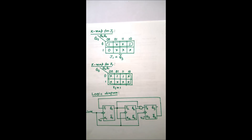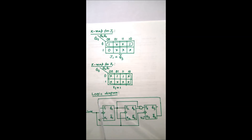Continuing with the design expressions: K2 = Q1, J1 = Q3-bar, and K1 = 1. According to these relationships, the logical circuit diagram has been made, and that is what we will be implementing in the lab.